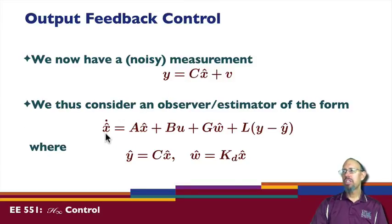We're now going to consider an estimator of this form. So notice x-hat dot is equal to ax-hat plus bu. And then we have this. What's this? It's an estimate of the disturbance. An estimate of the disturbance.